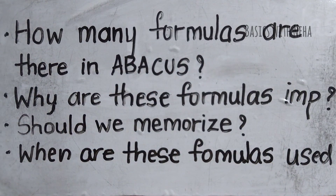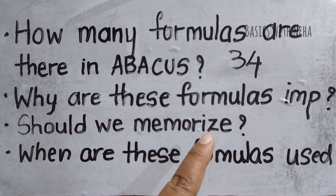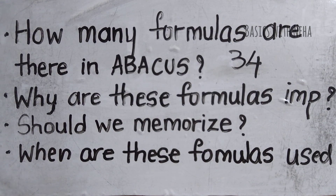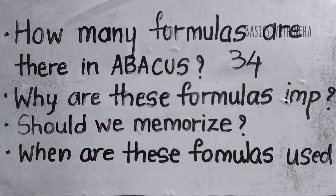How many formulas are there in Abacus? There are a total of 34 formulas. Why are these formulas important? These formulas are important for fast calculation on the Abacus tool. Also, if a child or anybody wants to visualize using the Abacus tool, these formulas are important. Without the formulas, you will not be able to really visualize anything and solve mentally. Should we memorize these formulas? Not really required — if you watch this video completely without skipping it, you will be able to recall any formula at any point of time without even memorizing it.